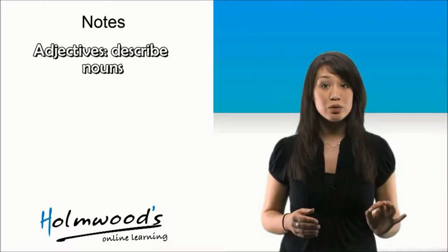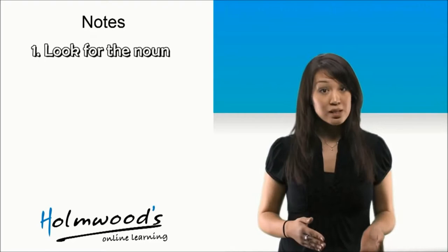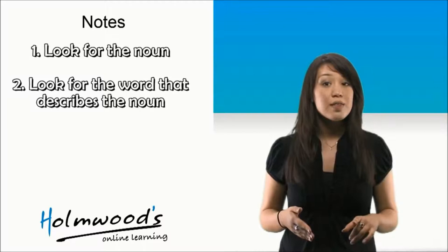To find the adjective, you first look for the noun. Remember, the noun is the person, animal, thing, or place in the sentence. Once you find the noun, you can look for the word that describes that noun.